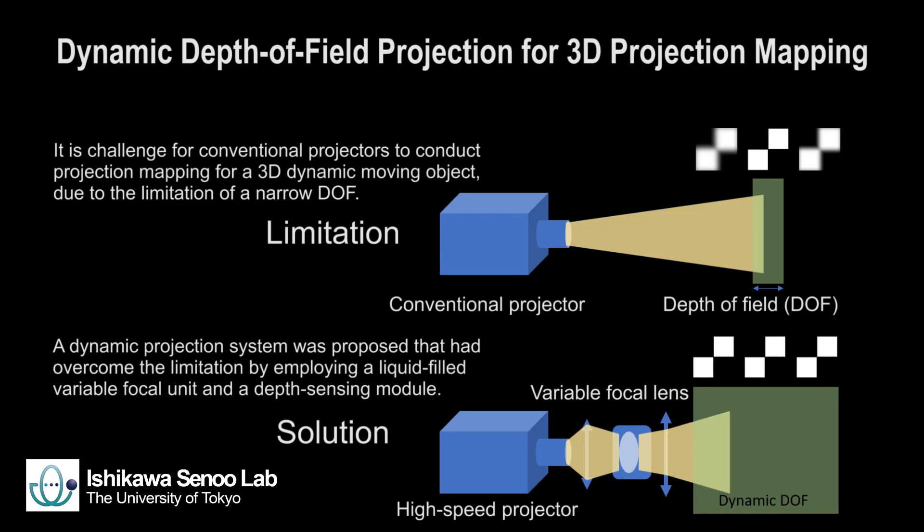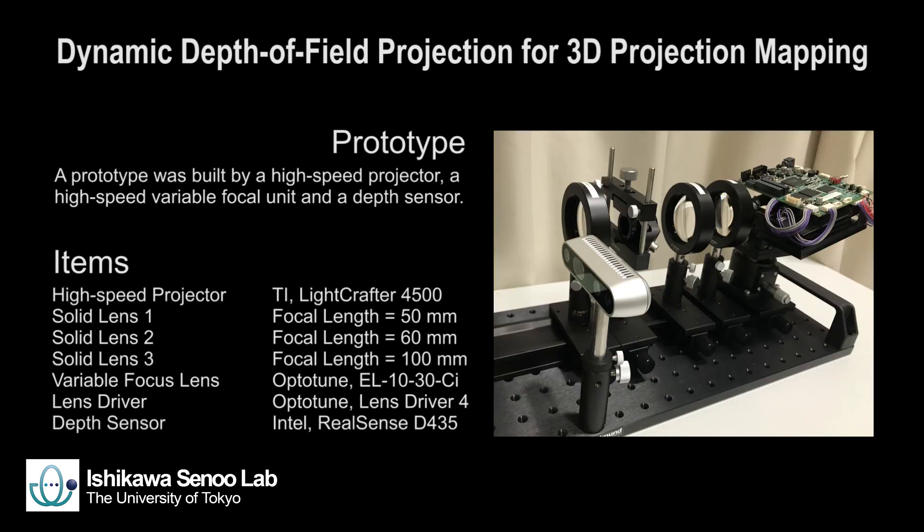This video introduces a dynamic depth of field projection system to realize a 3D projection mapping. The prototype includes a high-speed projector, a high-speed variable focus lens, and a depth sensor.